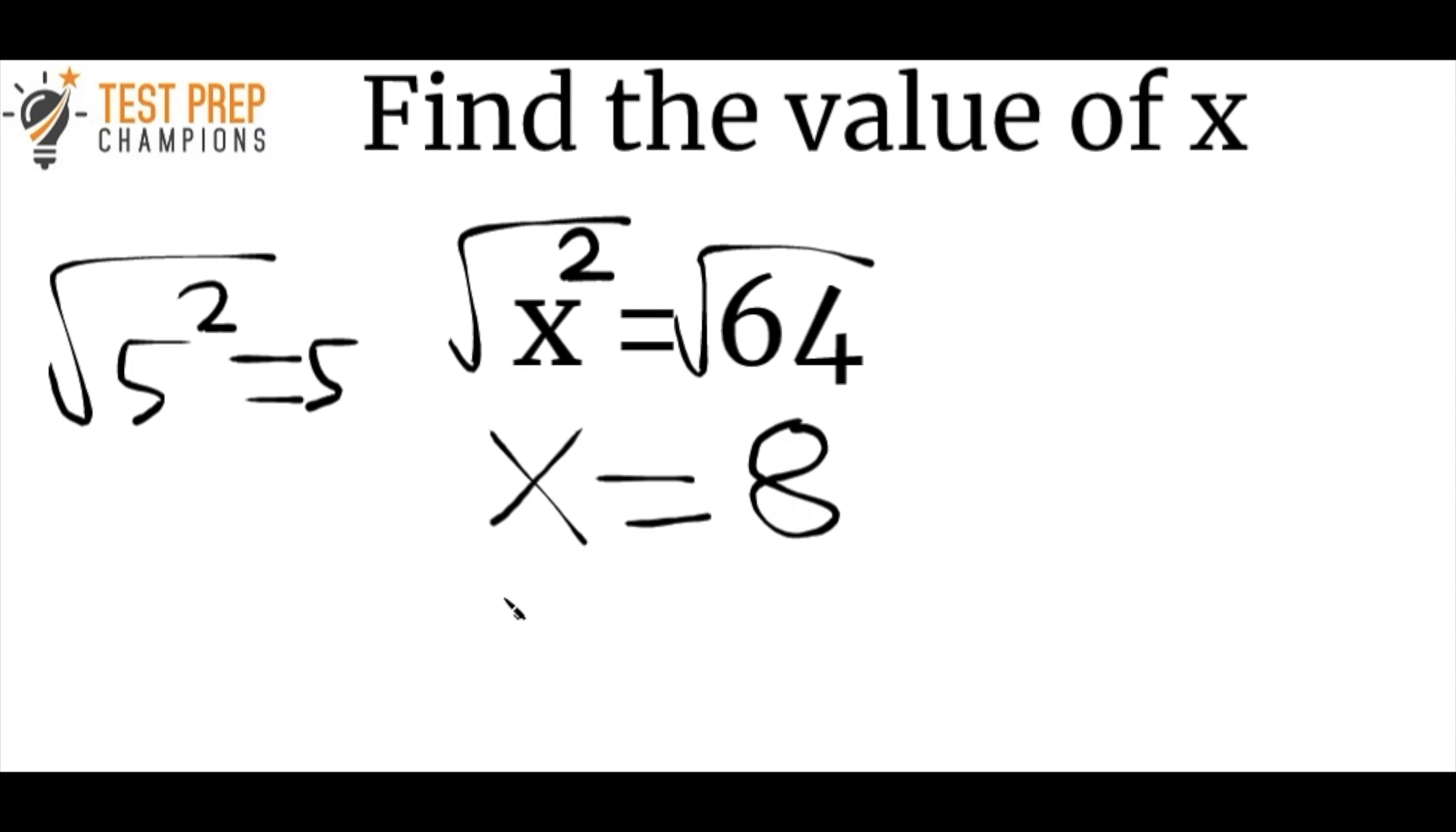Now, an incorrect way to do this would be to try to do 64 times 64. So some students would get a question like this, x squared equals 64. And they'd try to solve it for x by squaring the 64. So they would do 64 times 64. And they would get a really, really big number here, like 4,096, right, but that's actually incorrect. So that's not what you want to do here.